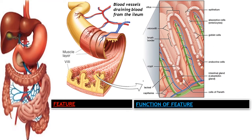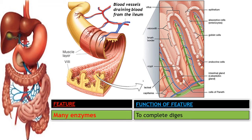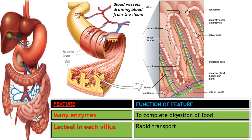Other features include having many enzymes. These enzymes are produced from intestinal glands, also called crypts of Lieberkühn. Secretions from cells within these glands contain enzymes such as lactase, lipase, and peptidases. These enzymes are important because they complete the breakdown of disaccharides into monosaccharides and peptides into amino acids — the smallest molecules that can easily be absorbed into the bloodstream.